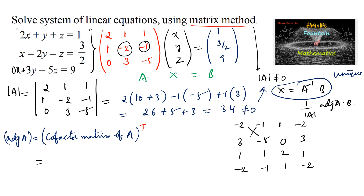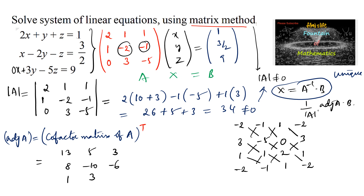Computing the cofactors: (−2)(−5) − (−1)(3) = 10 + 3 = 13; (−1)(0) − (−5)(1) = 0 + 5 = 5; 3(1) − 0 = 3. Next: (1)(−5) − (1)(3) = −5 − 3 = −8 → 8... continuing: 0(1) − (−1)(3) = ... giving values 8, −10, −6; and 1, 3, −5. After transposing, adj(A) = [13, 8, 1; 5, −10, 3; 3, −6, −5].